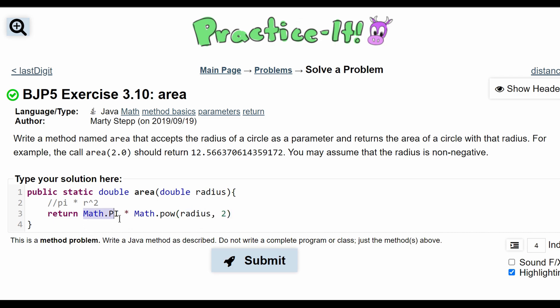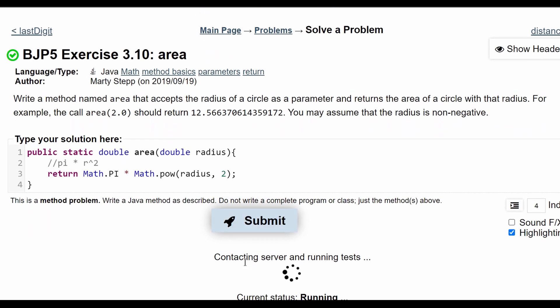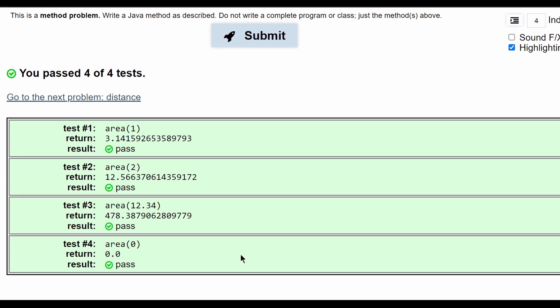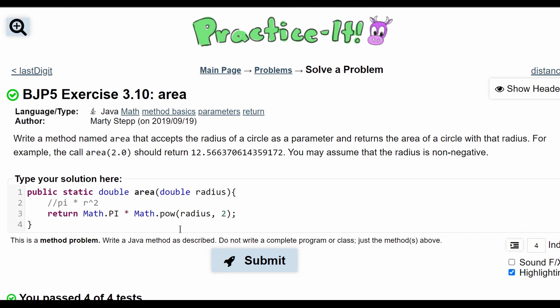What this is doing is Math.PI is a constant, so it's 3.14, etc., times Math.pow, which is radius raised to the power of 2, and then we're going to return this, and we have passed all the tests. So this is the code for this problem.